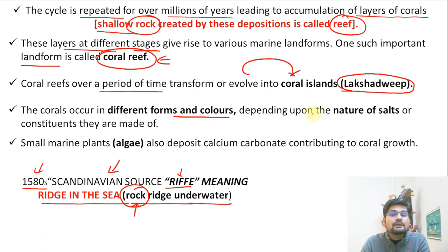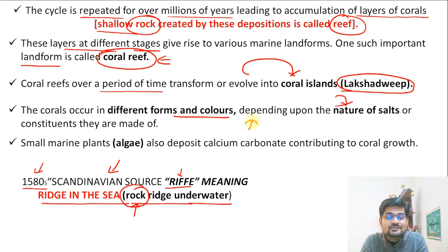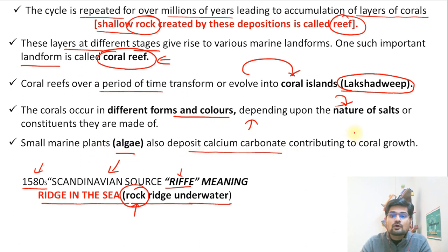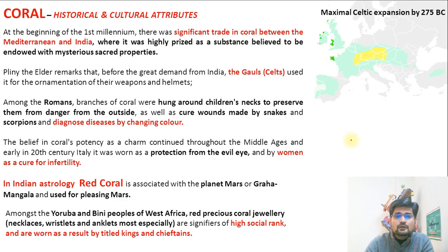Corals occur in different forms and colors, dependent upon the nature of salts. Salinity is one important feature related to the formation of coral reefs. Small marine plants like algae also deposit calcium carbonate, contributing to coral growth — that is an important point to remember.